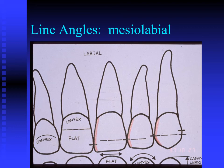Looking at the facial view again, there is a phenomenon where incisal embrasures and interproximal contacts tend to get a little more cervical as we move distally. This leaves the embrasure between the central incisors as the smallest, between the central and lateral incisor a little bigger, and between the lateral incisor and canine even bigger still. The interproximal contact location also becomes lower or more cervical as we move distally: incisal one-third, then junction of incisal and middle one-thirds, then middle one-third as we progress.